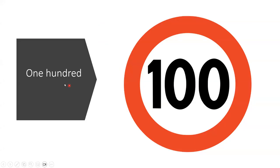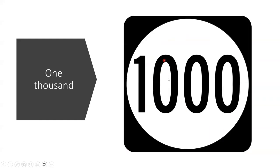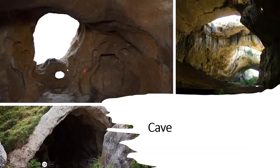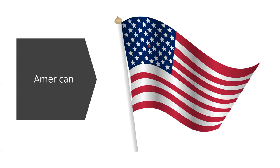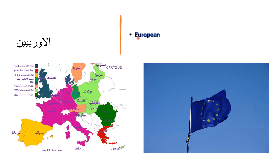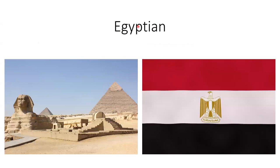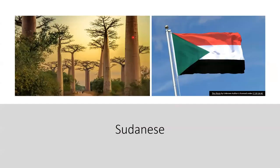Our new words today: 100 — this is one hundred. 1,000 — this is one thousand. Cave — this is the cave, and these are caves. Wall. American. European. Egyptian. Sudanese.